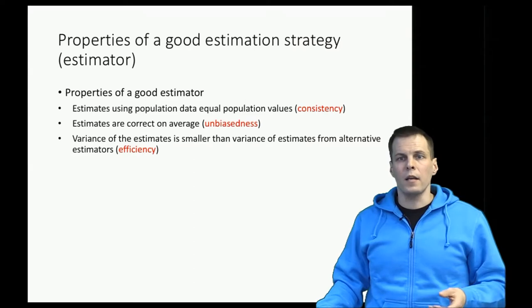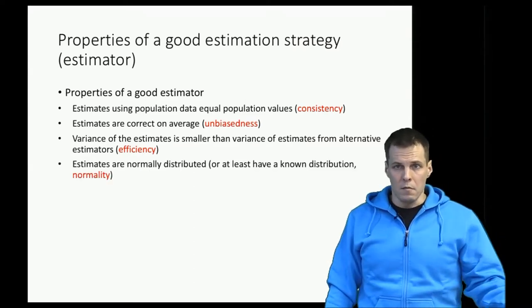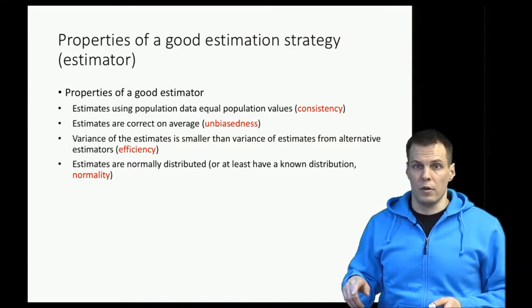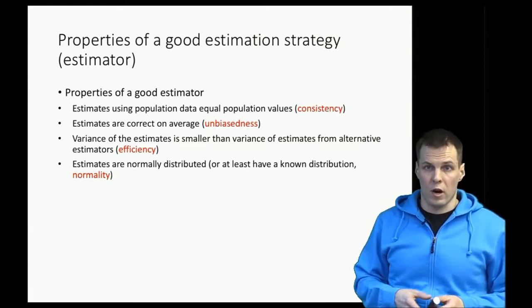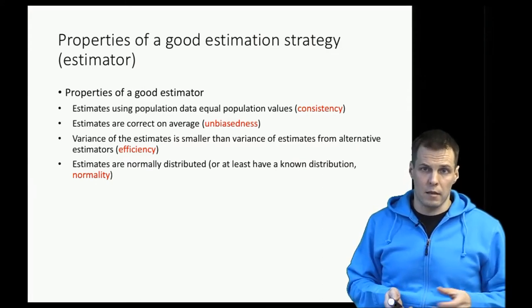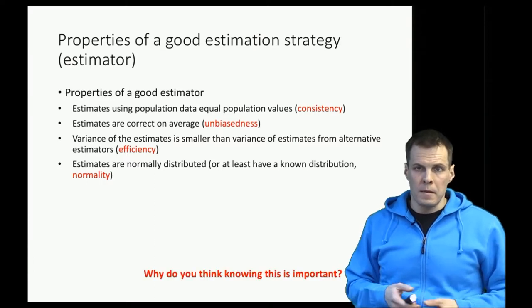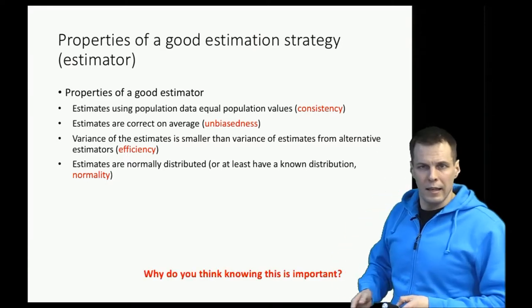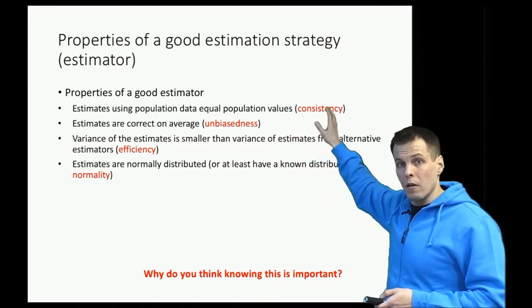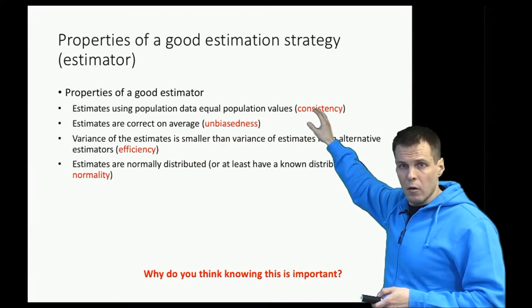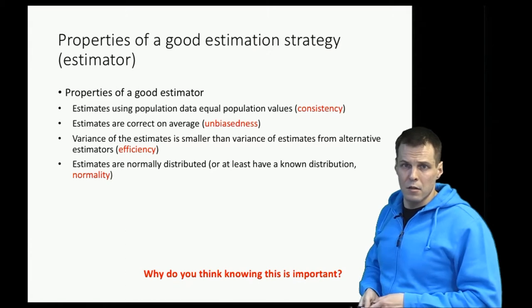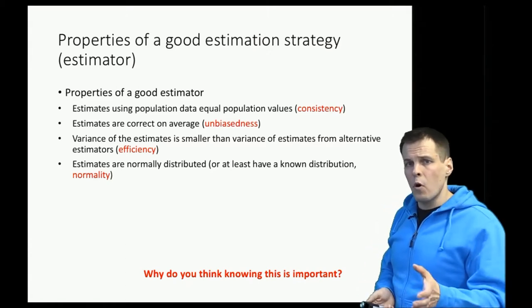Finally, we have normality. It's useful for statistical inference if the estimates are normally distributed over repeated samples, or at least follow some other known distribution. Why that's important will be discussed a bit later. Now, this is statistical theory that you may not encounter directly in empirical articles. But it's important for two reasons.